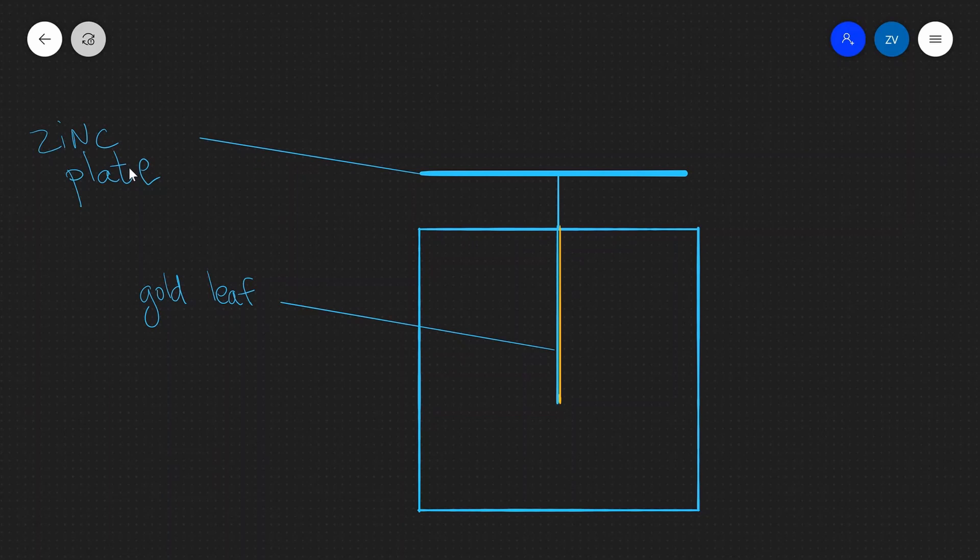We have a gold leaf electroscope which is a pretty simple device. All it consists of is a little zinc plate. It's normally a zinc plate, it could be actually a different type of metal as well, and we have a gold leaf which is placed in this insulator box.